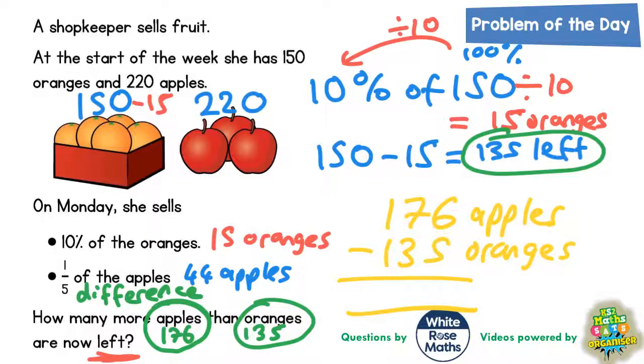And see what the difference is between the apples and oranges. 6 take away 5 is 1. 7 take away 3 is 4. And 1 take away 1 is 0. So how many more apples than oranges are now left? The final answer is 41.